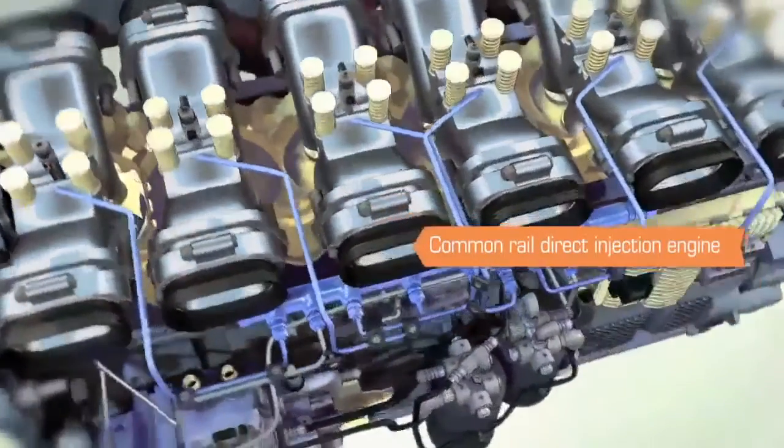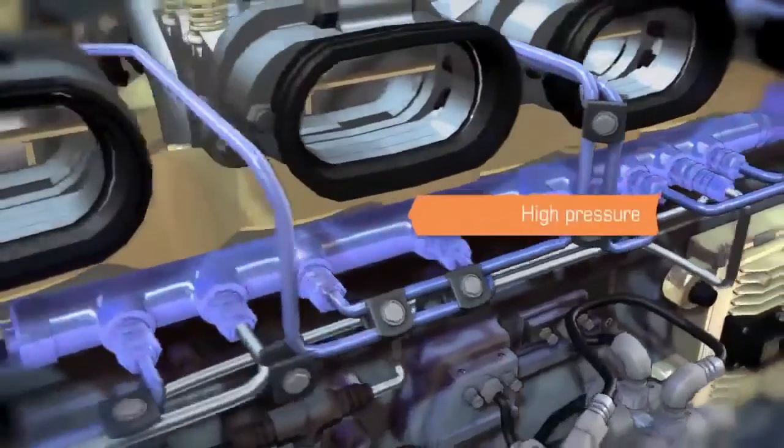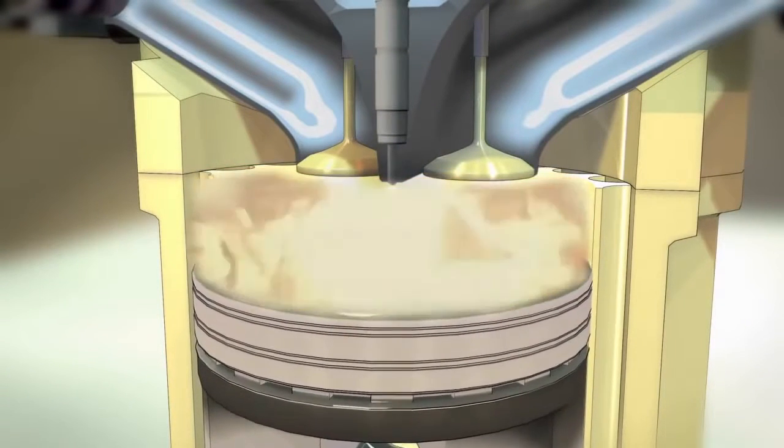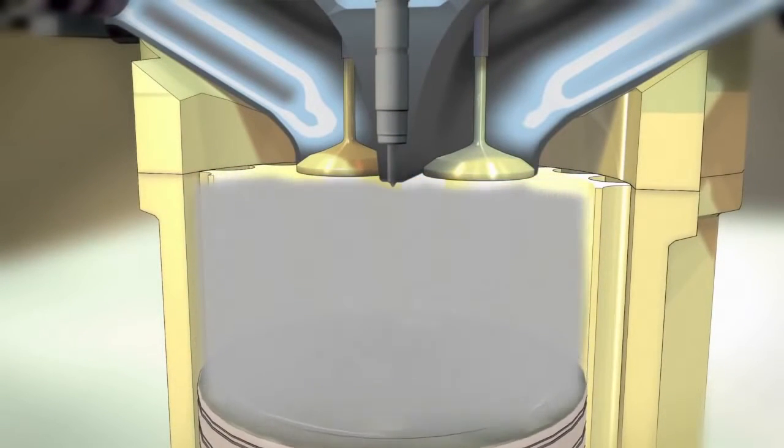Engines fueled through common rail systems operate at extremely high pressures and temperatures and must inject fuel into the combustion chamber in finely atomized droplets. The smaller the size of the droplets, the easier the diesel fuel vaporizes.